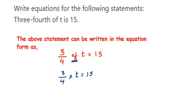When you multiply 3 and t it becomes 3t, so 3t upon 4 is equal to 15, and this is the required equation. This is very simple but can come for a one-mark question. I hope it's clear. In case you have any other question or doubt, you can drop a comment. Thank you so much for watching.